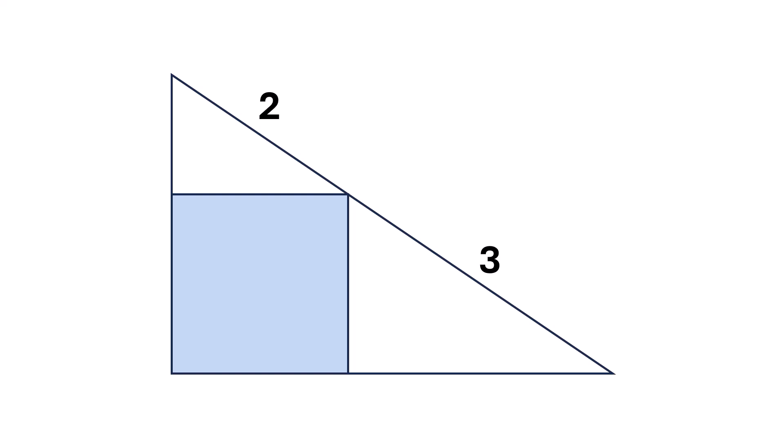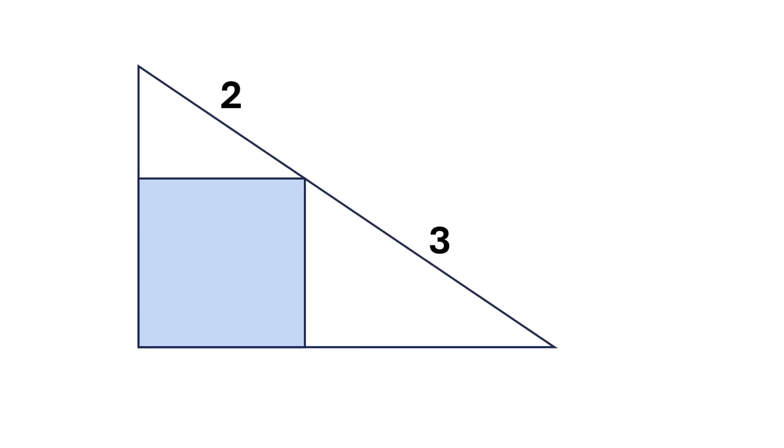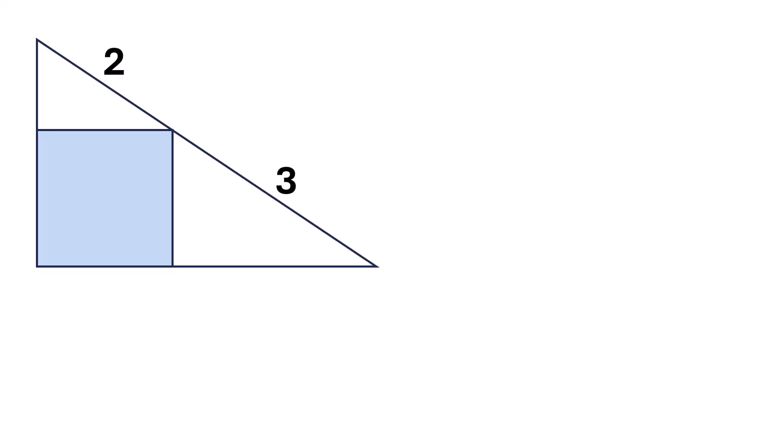All right, let's go back to the solution and see how we can find it. Suppose the length of the square is x, and this length is a. Now focus on these two triangles.